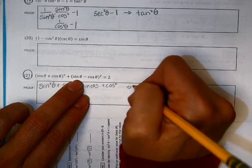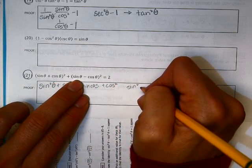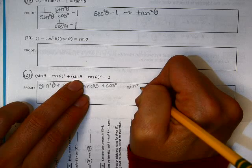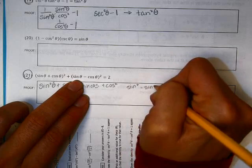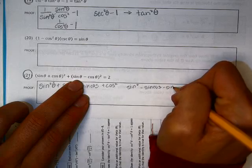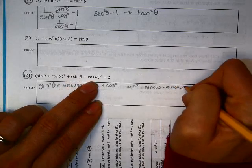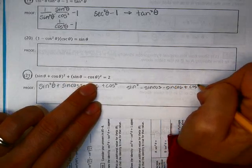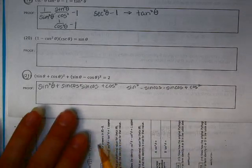And then I'm going to get sine squared minus sine cos, minus sine cos, and then plus cos squared. Whew, that's a lot. Let's see if I can get rid of anything.